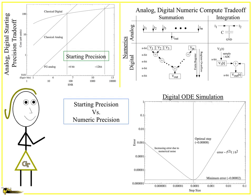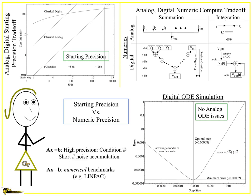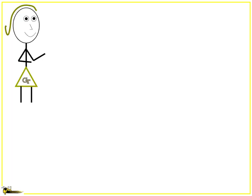When looking at differential equation solutions, there are classic plots for, say, a second-order structure, where as the step size decreases it gets better for a while, but then at some point it actually gets worse again — knowing full well that in analog there just aren't any ODE issues to begin with. That sets the whole conversation. AX = B makes sense for digital because you have high precision numbers and short numeric accumulations, and AX = B is your numerical benchmark — that's how we think of computing in a digital sense.